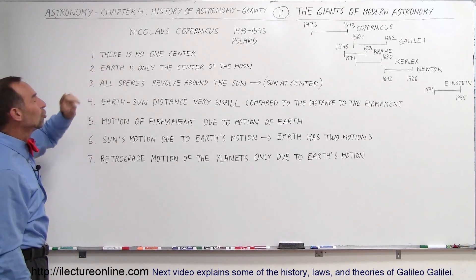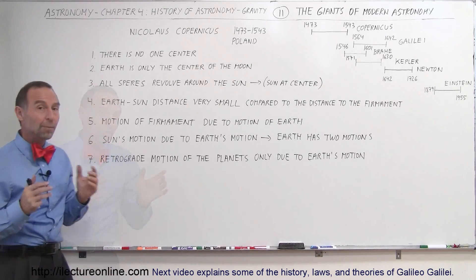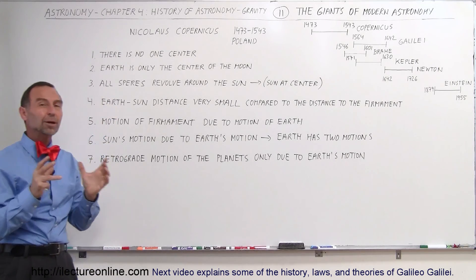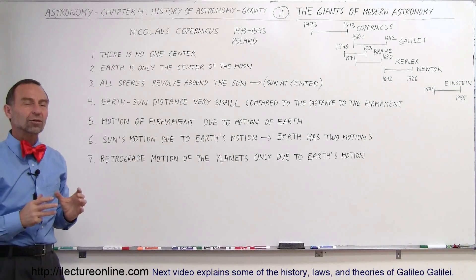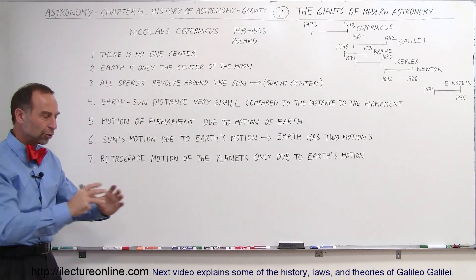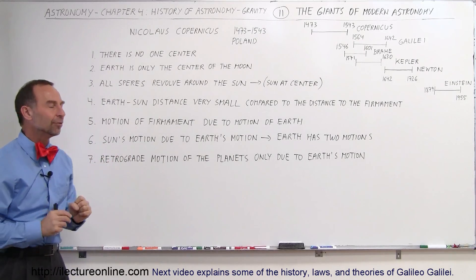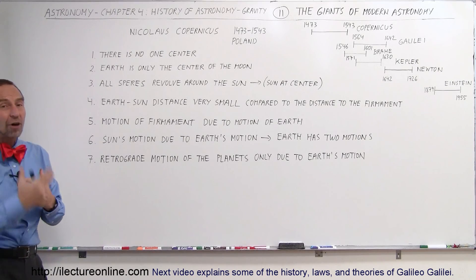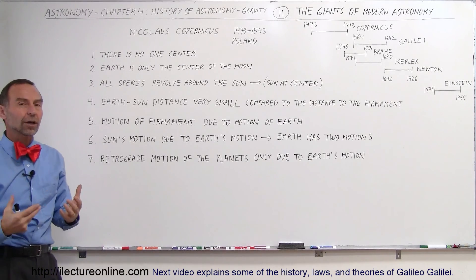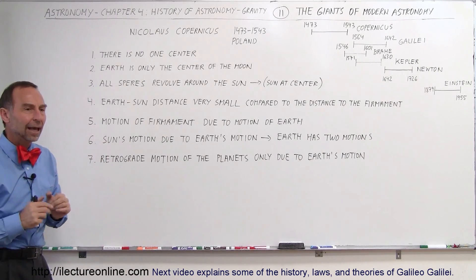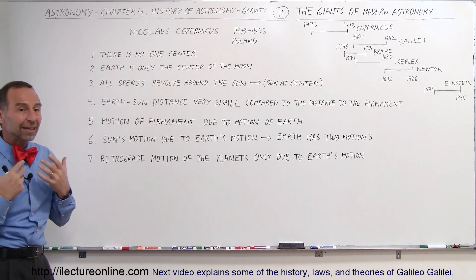First of all, he claimed that there was no one center. Remember that in those days, everybody believed that the Earth was at the center. There was just one center in the universe, and the Earth was right there in the middle of it. So everything else revolved around the Earth, including the sun. At least that was the thought of the day, and by almost everybody, that was the accepted way.